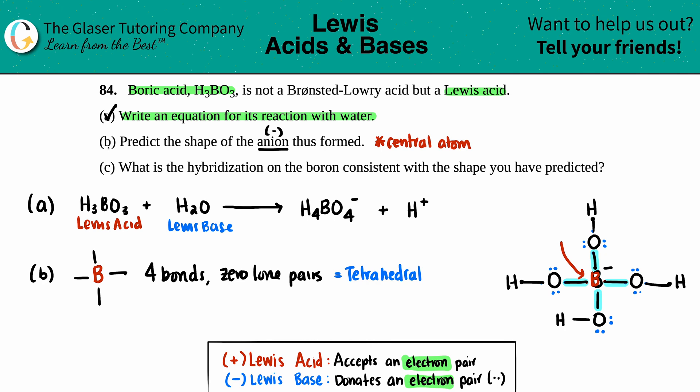Part (c): What is the hybridization on the boron consistent with the shape you predicted? Hybridization always comes from what's surrounding the boron—there are four things surrounding it, and four things accounts for four letters. You always start with one s and add your p's. One s and three p's gives sp³ hybridization.